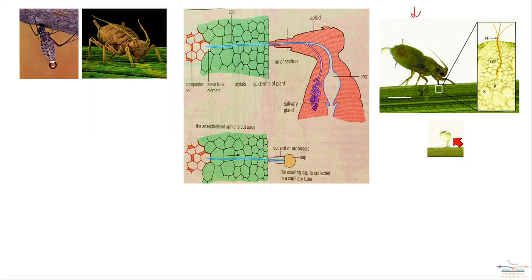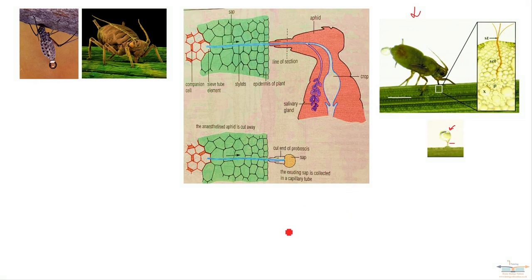The last image shows phloem sap exuding from the cut part of the stylet. Aphids have been used extensively to study the phloem vessel, and various experiments use aphids to figure out other things about phloem transport. So far, we've looked at the evidence to prove that it's the phloem vessels that transport sugars. Next, we're going to look at other factors that have been shown to happen in phloem transport that are not part of the mass flow hypothesis.